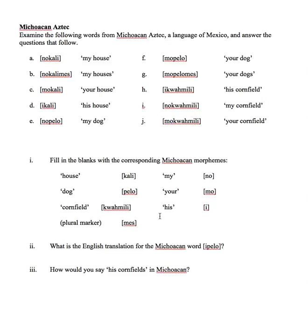We've completed the hardest part — determining what each morpheme represents in Michoacan Aztec. Before moving to part two, it's useful to determine the order of elements in this language, which is actually very similar to English. In English, if we say 'my dogs,' the possessive pronoun comes first, then the noun 'dog,' then the plural marker '-s' at the end. That order is exactly the same, just by coincidence, in Michoacan Aztec.